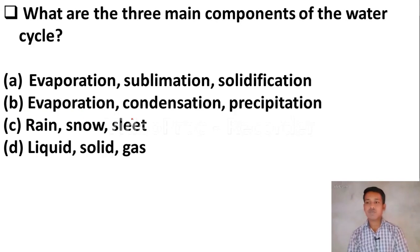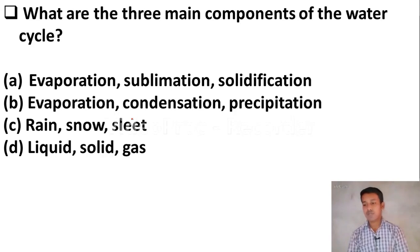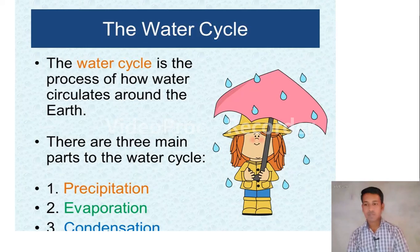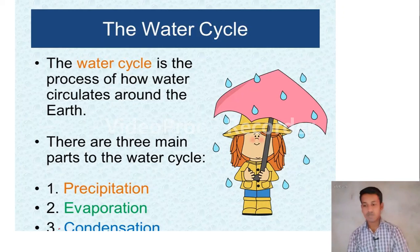Next question: what are the three main components of the water cycle? Option A, evaporation, sublimation, solidification. Option B, evaporation, condensation, precipitation. Option C, rain, snow, sleet. Option D, liquid, solid, and gas. The correct answer is Option B — evaporation, condensation, and precipitation. The water cycle is the process of how water circulates around the Earth, and the three main parts are precipitation, evaporation, and condensation.